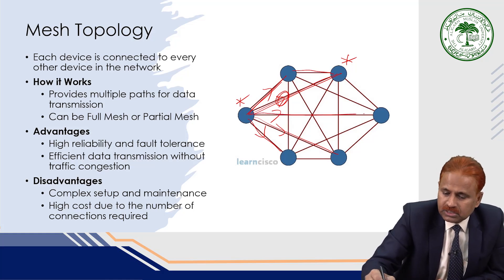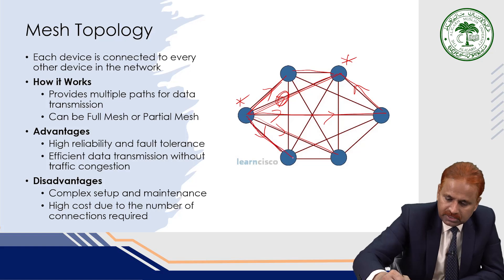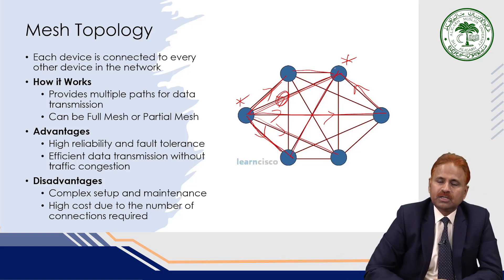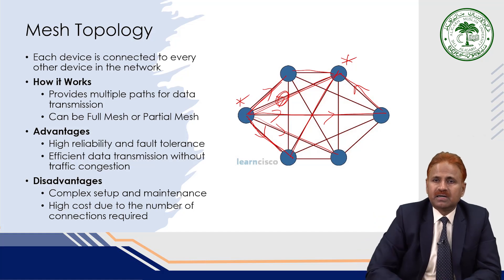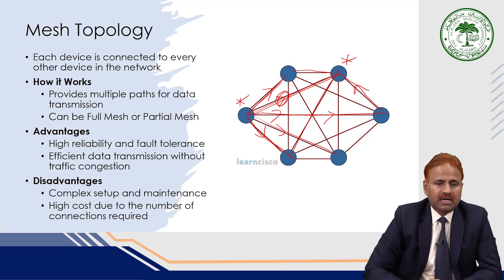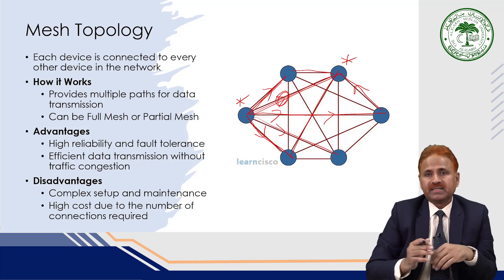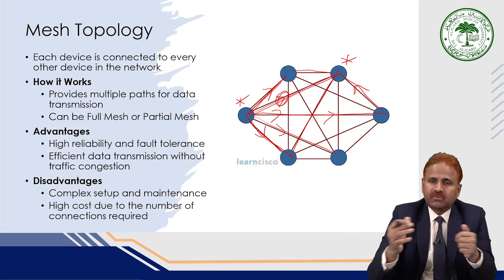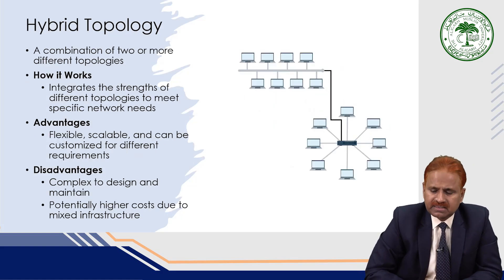There may be yet another alternate path available, so mesh topology offers multiple paths, ensuring reliable delivery of data. The advantages are high reliability and fault tolerance, and efficient data transmission without traffic congestion. The disadvantages are complex setup and maintenance, and high cost due to the large number of cables required for all the connections.